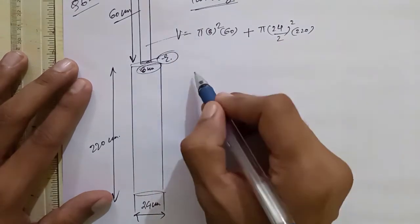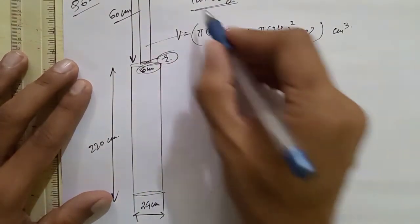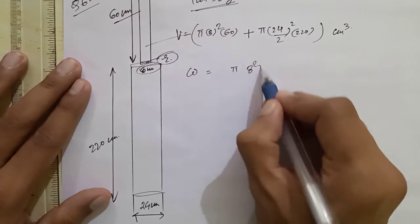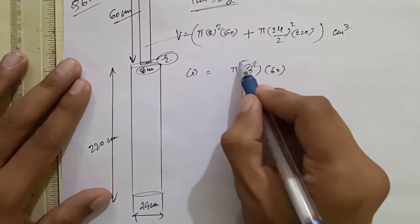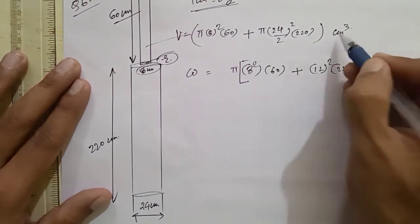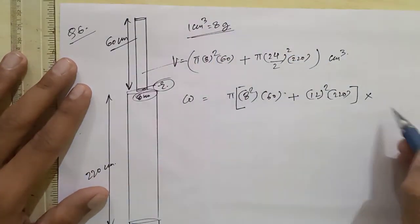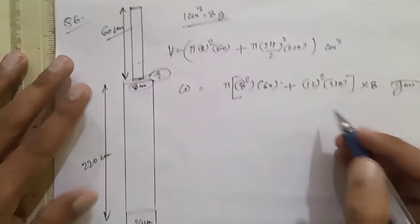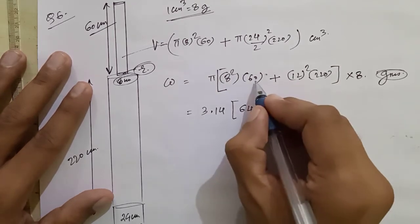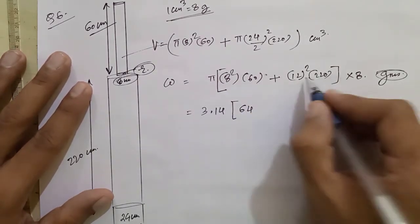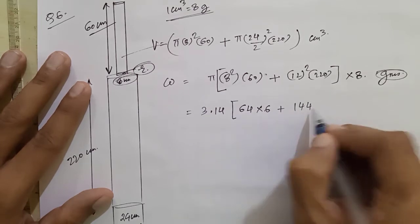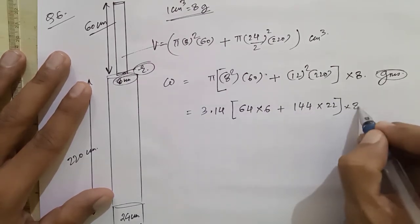The total volume in centimeter cube is obtained by adding both cylinders. Since 1 cm³ is 8 grams, we multiply the total volume by 8 to get the total weight. Volume = π × 8² × 60 + π × 12² × 220. Taking π common: π × (64 × 60 + 144 × 220). Then multiplying by 8 (grams per cm³) gives the weight in grams. π = 3.14 is substituted, with the 10 factored out.